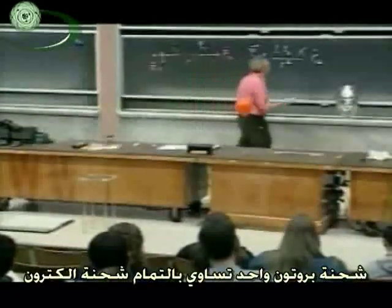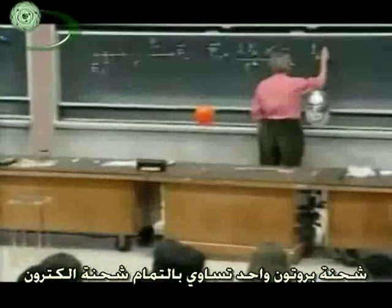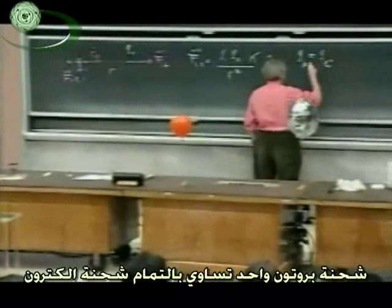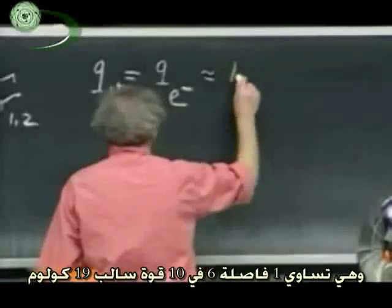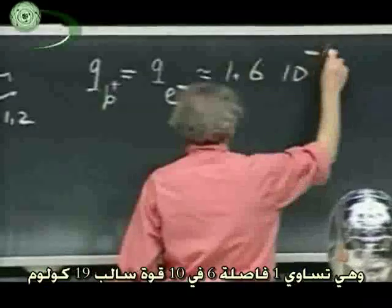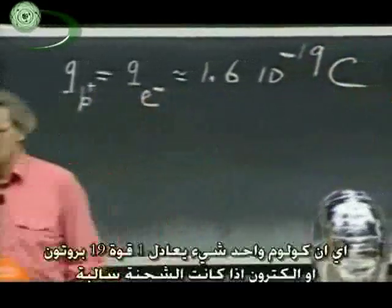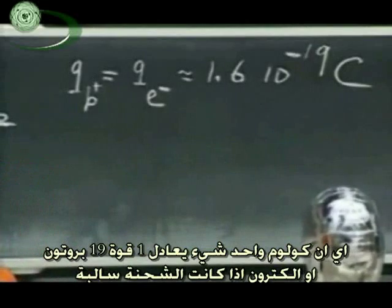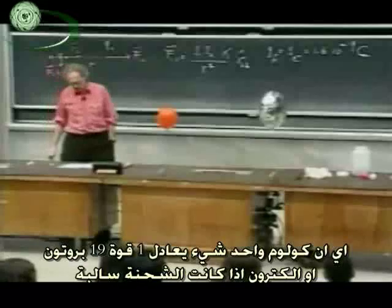The charge of one proton, which is exactly the same as the charge of one electron, is approximately 1.6 times ten to the minus nineteen Coulombs. So one Coulomb is something like six times ten to the eighteen protons or electrons if the charge is negative.